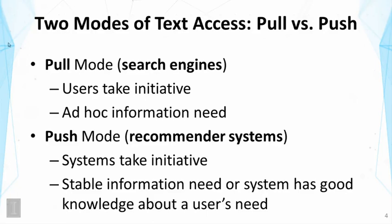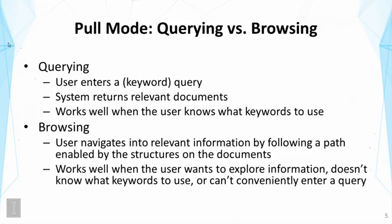So those are the two high-level strategies or two modes of text access. Now let's look at the pull mode in more detail. In the pull mode, we can further distinguish two ways to help users: querying versus browsing. In querying, a user would enter a query, typically a keyword query, and the search engine system would return relevant documents to the user. This works well when the user knows exactly what keywords to use.